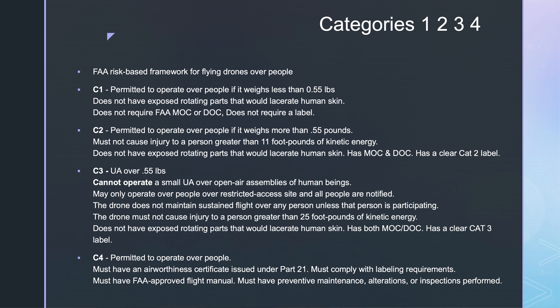So category one allows you to operate over people if your drone weighs less than 0.55 pounds. That's a very small drone. It does not have exposed rotating parts that would lacerate human skin. It does not require the FAA MOC or DOC, which are documents required. And it does not require a label. That's category one.